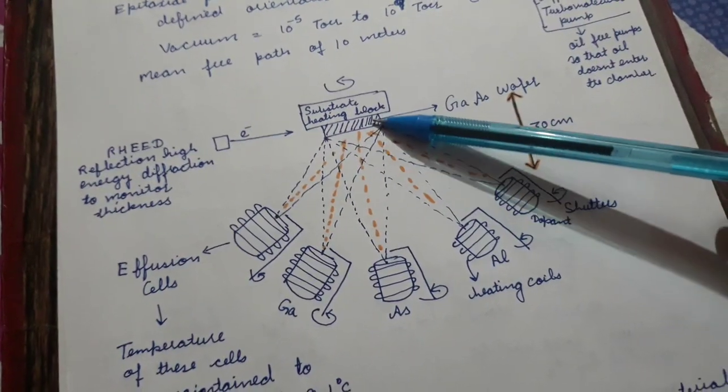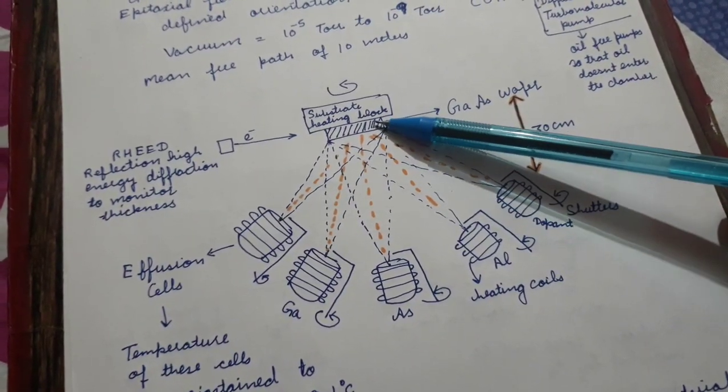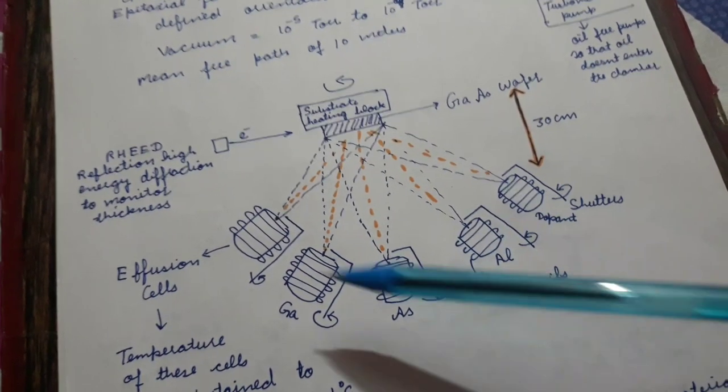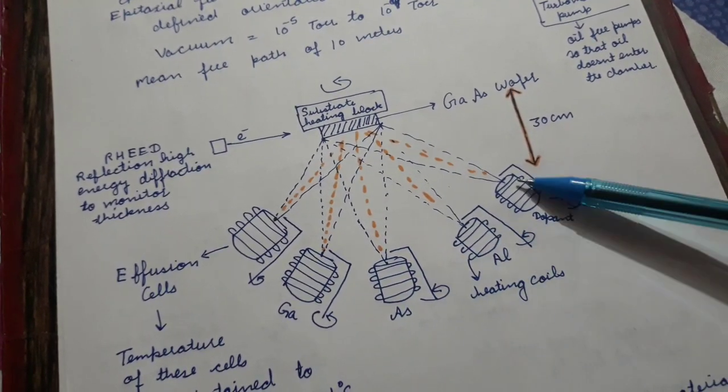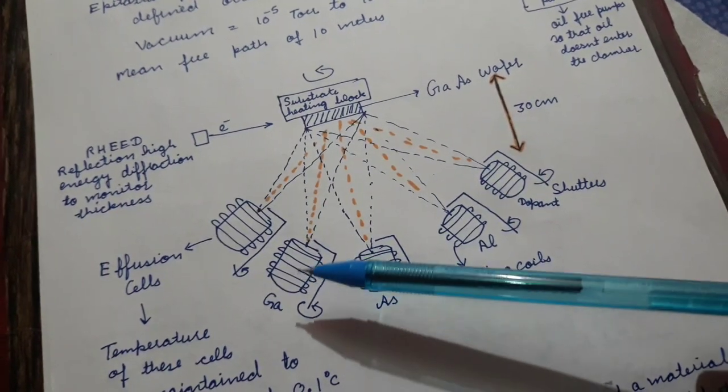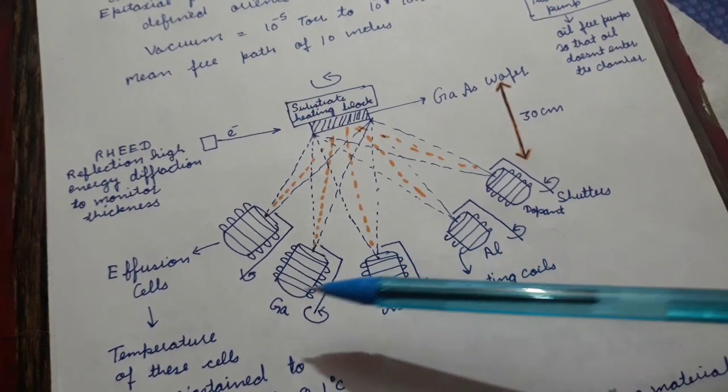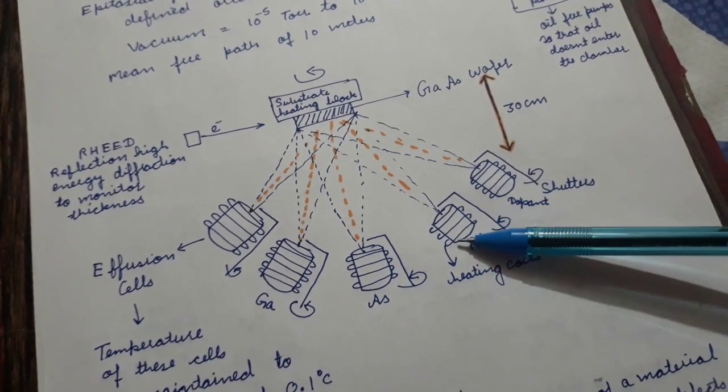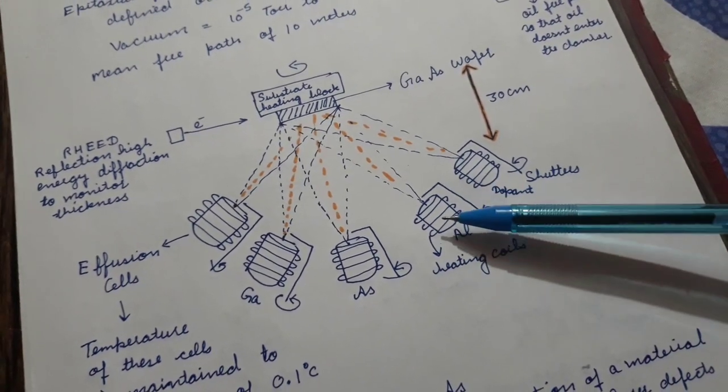These chambers are called effusion cells and contain whatever material is required to be deposited on the substrate. For example, if you want to deposit gallium arsenide, you have a chamber of gallium, a chamber of arsenic. If you want to dope it with aluminum, you have a chamber of aluminum.